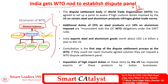This structure of the WTO is important for the prelims perspective. The news is that additional duties of 25% on steel products and 10% on aluminium imposed by the US has worried Indian exporters. Following this, India approached the dispute settlement body of the WTO to resolve this irregular trade order, and the WTO agreed to set up a panel to assess if the high customs duties imposed by the US on steel and aluminium products infringe on global trade norms.